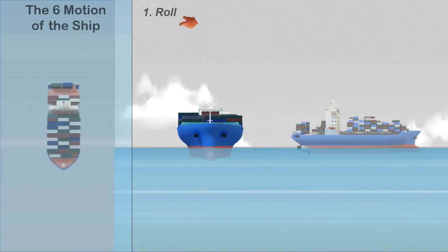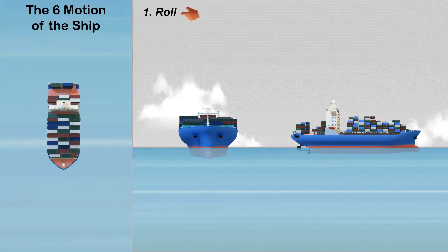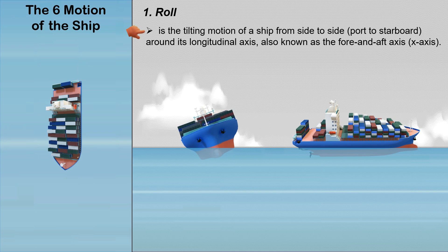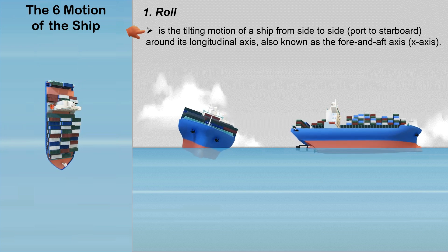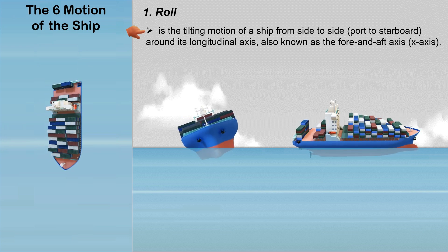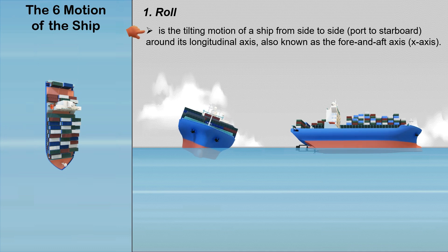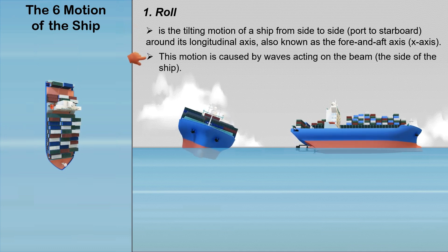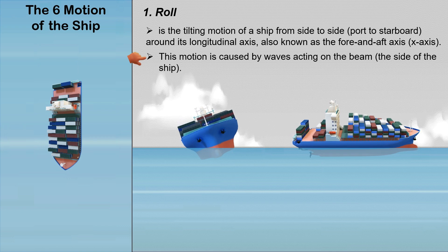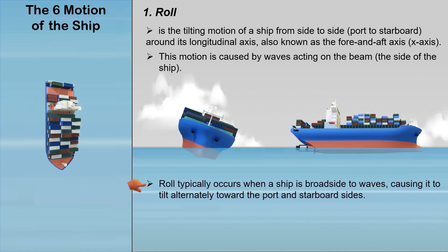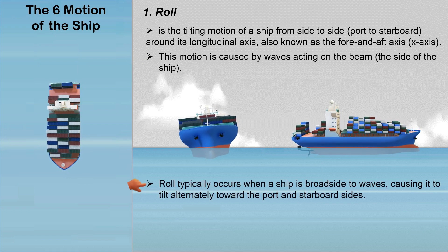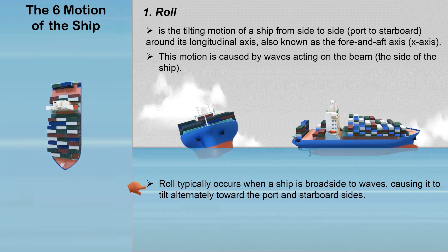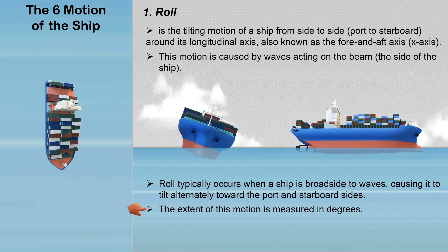Roll is the tilting motion of a ship from side to side, port to starboard, around its longitudinal axis, also known as the fore and aft axis or x-axis. This motion is caused by waves acting on the beam, the side of the ship. Roll typically occurs when a ship is broadside to waves, causing it to tilt alternately toward the port and starboard sides. The extent of this motion is measured in degrees.